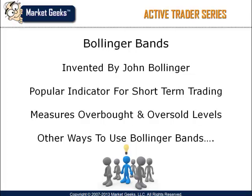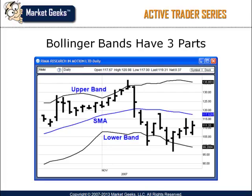Today I will show you a different, more robust use for this indicator. The Bollinger Band consists of three parts: a simple moving average and two standard deviations of this moving average, known as the upper and lower bands.